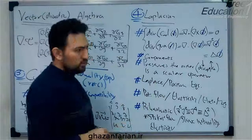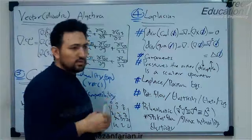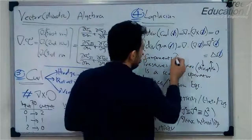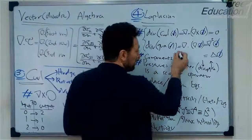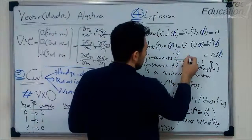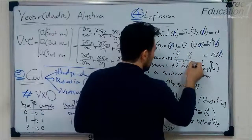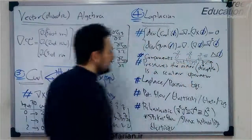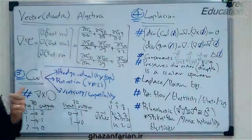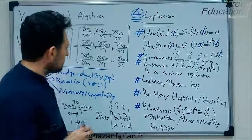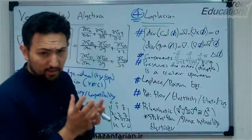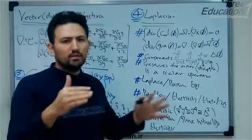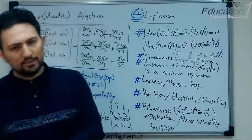We can easily compute the dot product of the gradient operator. The Laplacian operator is written as ∂²/∂x² + ∂²/∂y² + ∂²/∂z², which is the dot product of the del operator — a scalar operator. When you compute the Laplacian of a vector, the result is again a vector. The Laplacian of a scalar is a scalar.